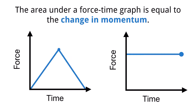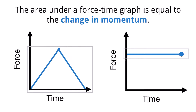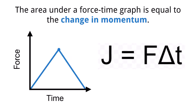In our discussion of impulse, we assume that the force exerted is constant. However, that is not always the reality, and the amount of force can vary over time. Therefore, a force-time graph can give us insight into how force over time impacts the change in momentum of an object. Using the impulse equation, we know that force times the change in time will equal the change in momentum. Therefore, on a force-time graph, finding the area under the curve will allow you to find the change in momentum.